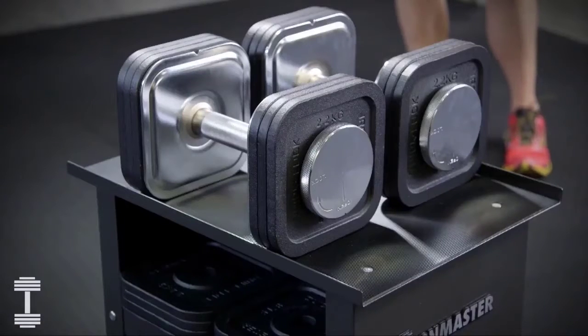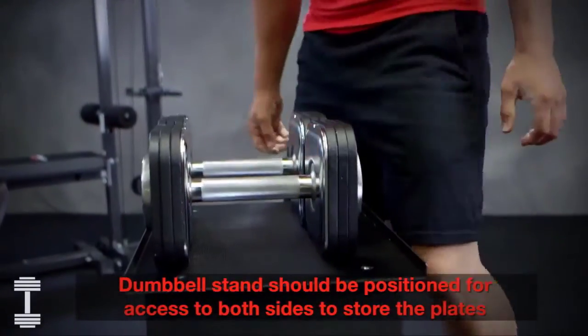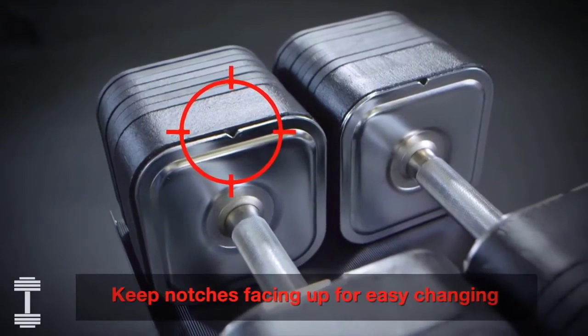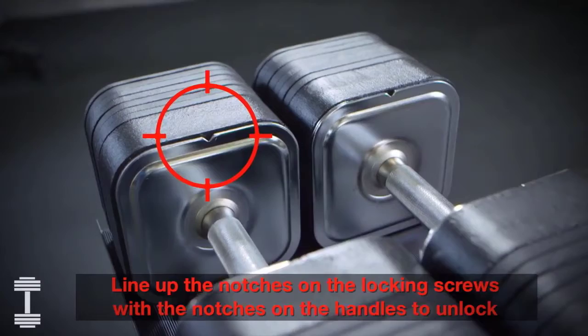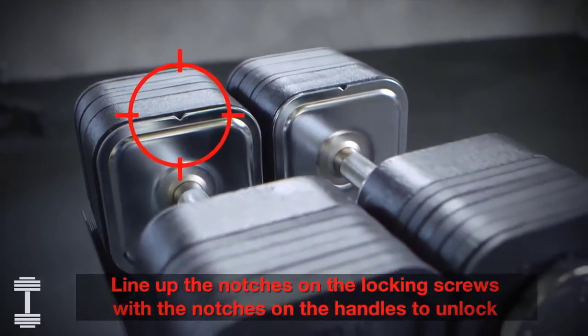The dumbbell handles normally are set down on the stand lengthwise. They can also be set down sideways on the stand in smaller weight ranges. It's important to set the dumbbells down with the notch facing up. This makes it easier to dial the locking screw notch to the unlocked position.